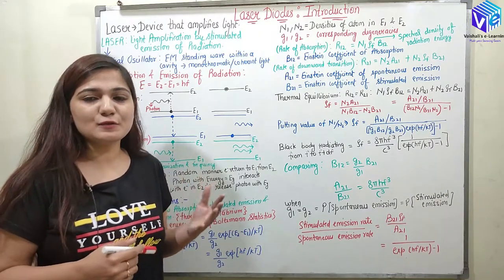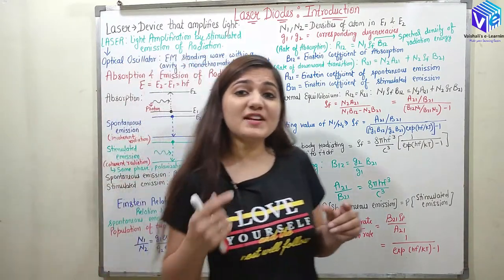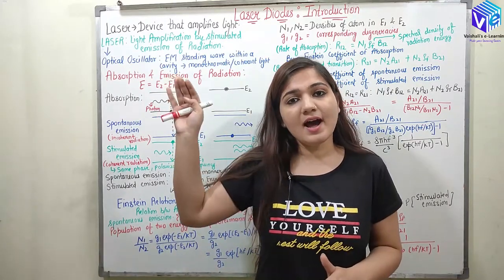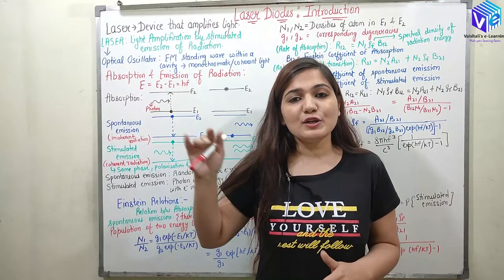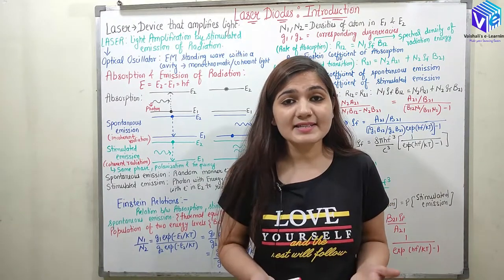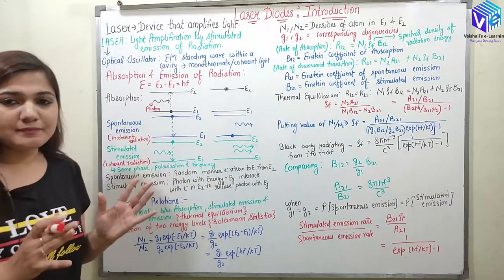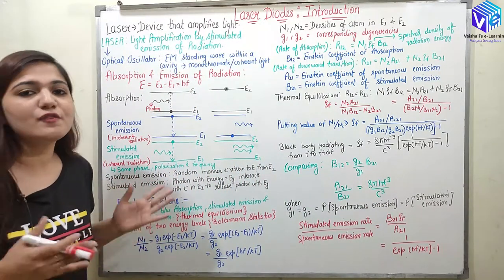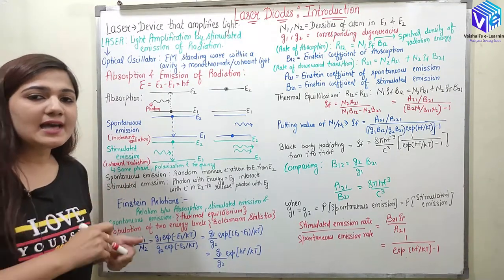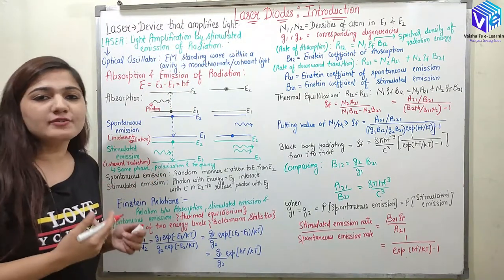Laser is an optical source which gives optical amplification — the amplification of light. When the light is amplified, it has higher intensity and higher power as well. So I can say laser is a device which gives better characteristics than the LED. Now, laser is an acronym. What is the full form of this acronym? Laser stands for Light Amplification by Stimulated Emission of Radiation.